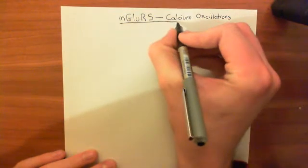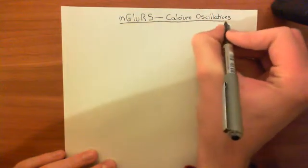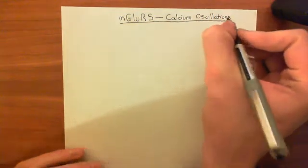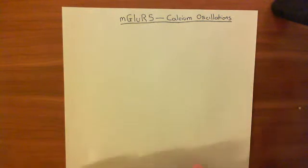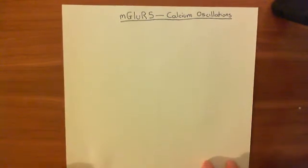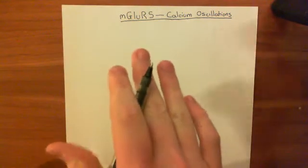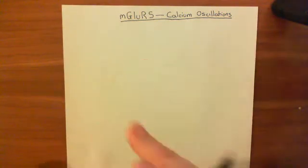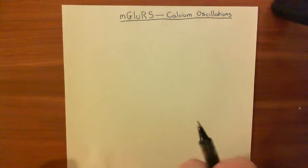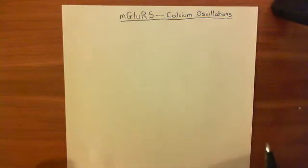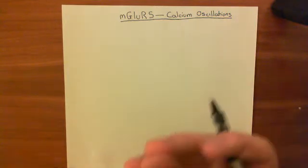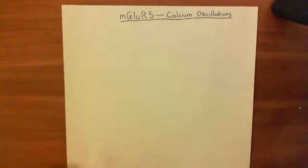This is quite a nice mechanism because, unlike all other mechanisms you'll see, it's going to use the IP3 pathway and actually create oscillations in the level of IP3, and that is then going to cause the oscillations in calcium. So let's have a look at this pathway.